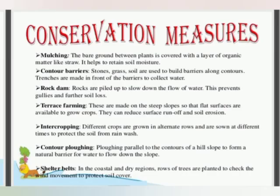Conservation measures for soil include mulching, contour barriers, rock dams, terrace farming, intercropping, and contour ploughing. Mulching is when the bare ground between plants is covered with a layer of organic matter. Contour barriers use stone, grass, and soil to build barriers. Rock dams use piled rocks to slow down the flow of water. Terrace farming is made on steep slopes. Intercropping involves growing different crops in alternative rows. Contour ploughing runs parallel to the contours of a hill slope.